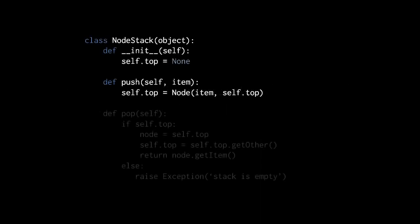Let's look now at how we might implement a stack using nodes, very much like a linked list. We're creating a Python class called nodeStack, and in its constructor we're simply assigning to an attribute called top, initially the value none. Top is the attribute that keeps track of the node which is at the top of the stack, though at the start the stack is empty.